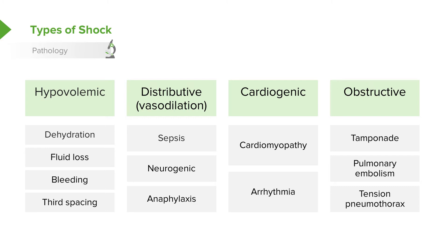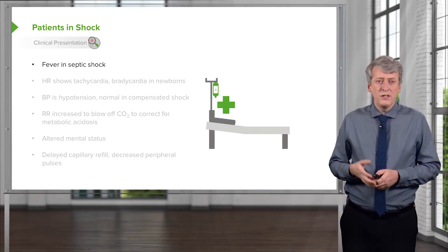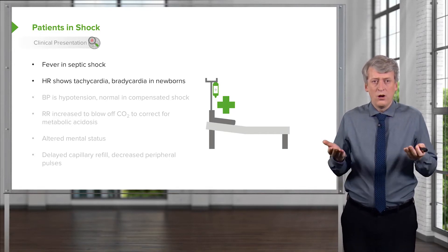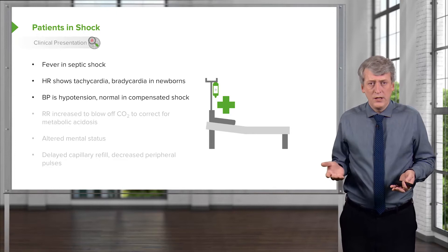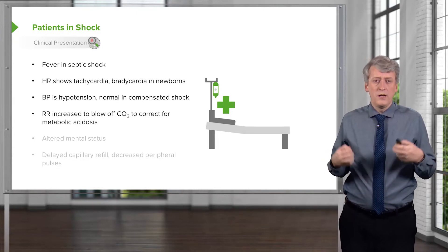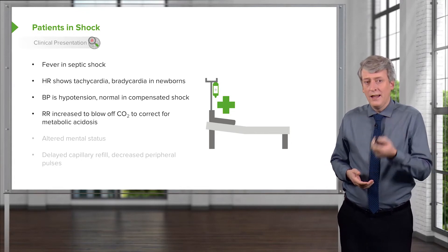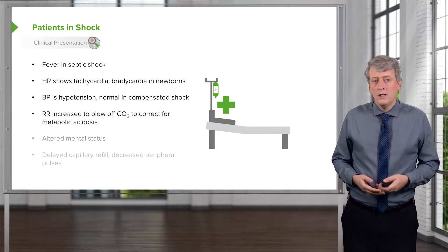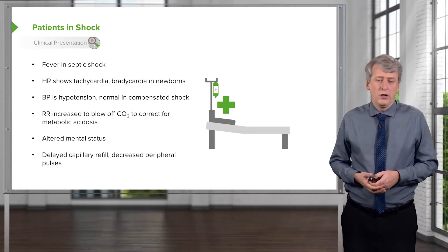Those are the general types of shock. When approaching patients in shock, we often see fever in septic shock. Heart rate will generally be tachycardic, although possibly bradycardic in newborns. Blood pressure will be low, though normal in compensated shock. Respiratory rate is often increased — this may be to blow off carbon dioxide to correct for metabolic acidosis, since underperfusion can result in lactic acidosis. Patients may have altered mental status from end organ damage to the brain, and a delayed capillary refill on exam.